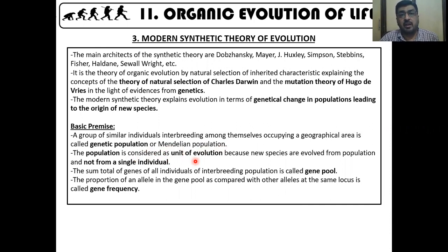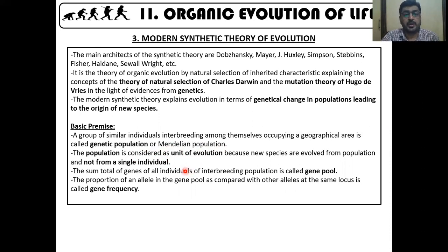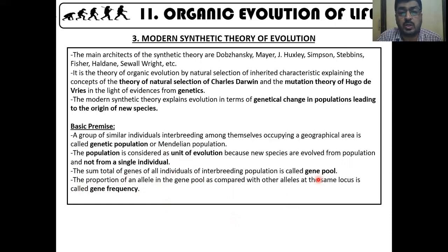The individual does not evolve — it is the entire population that evolves, and from that evolving population a new species can emerge. The sum total of genes of all the individuals of an interbreeding population is called the gene pool — all the genes put together.